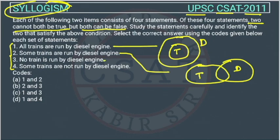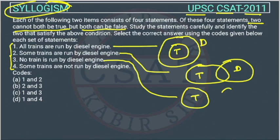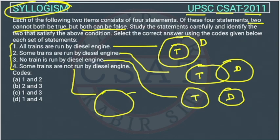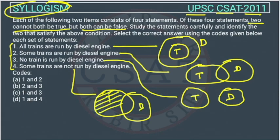The third statement is: 'No train is run by diesel engine' — there is no relationship between train and diesel. The fourth statement is: 'Some trains are not run by diesel engine.' This is represented by the area where trains and diesel do not overlap.